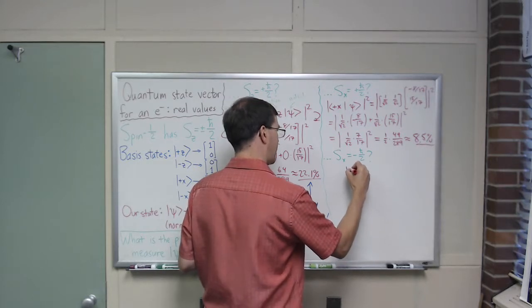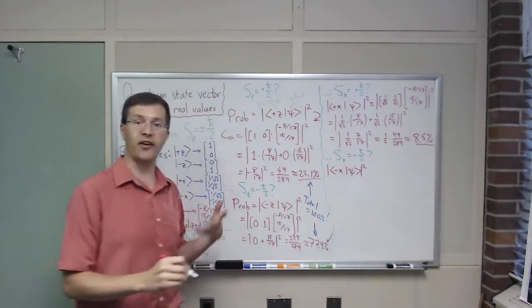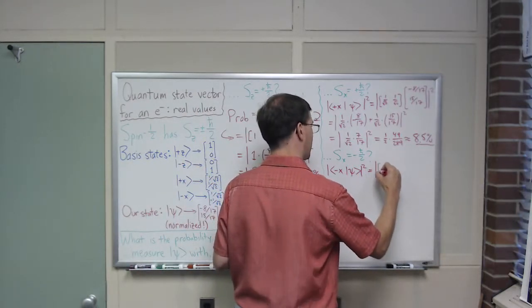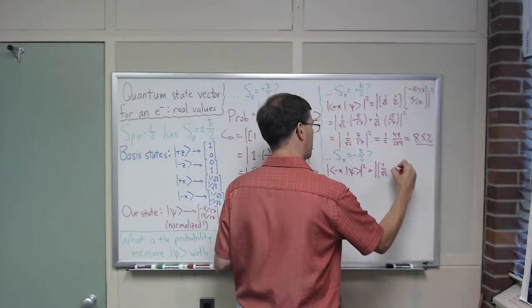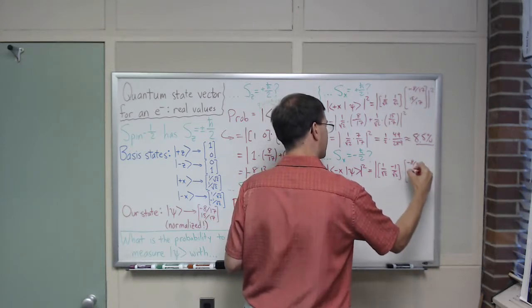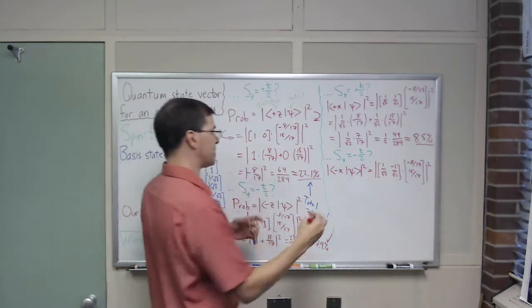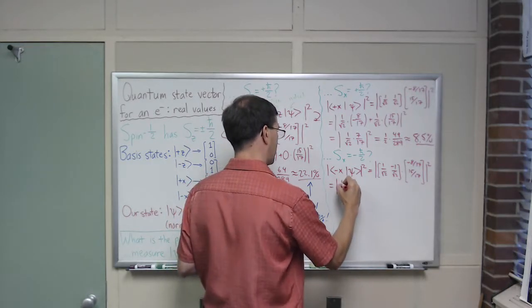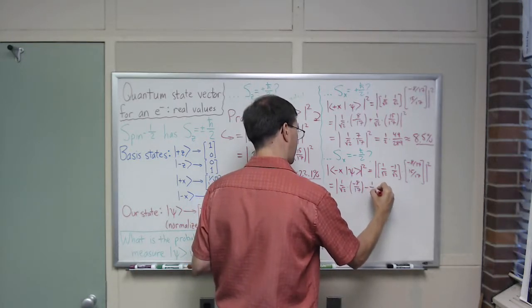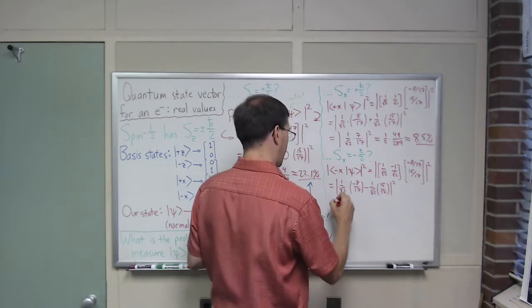Again, I'm starting in state psi, I'm asking the question, are you in the minus x state, and then I have to take the absolute square to find a probability. When I go into the step between probability, I do this, what's the difference, this is almost the same calculation. It's going to look almost identical. 1 over square root of 2 minus 1 over square root of 2 is my row vector, and minus 8 17ths, 15 17ths is my column vector. This looks almost the same, just a minus sign floating around. 1 over square root of 2 times minus 8 over 17, minus 1 over square root of 2 times 15 over 17, absolute square.